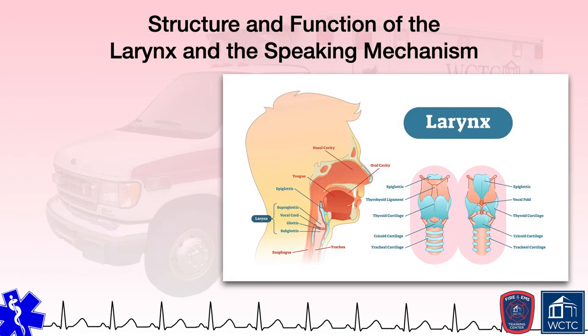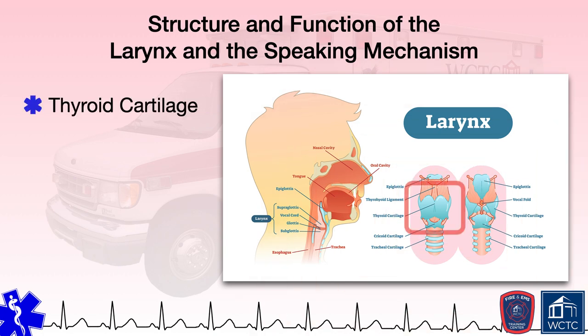The larynx sits between the pharynx and the trachea. It is a landmark denoting where the upper respiratory tract ends and the lower respiratory tract begins. The larynx and its structures serve three primary functions. The first is to serve as a passage for air from the upper respiratory tract to the lungs. The larynx is reinforced by several pieces of cartilage connected together by muscles and ligaments. The thyroid cartilage is the largest cartilage structure of the larynx, sitting anterior on the larynx, often referred to as the Adam's apple. The glottic opening sits posterior to the thyroid cartilage.